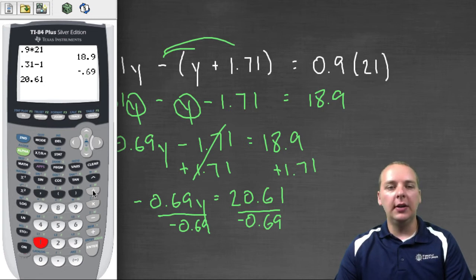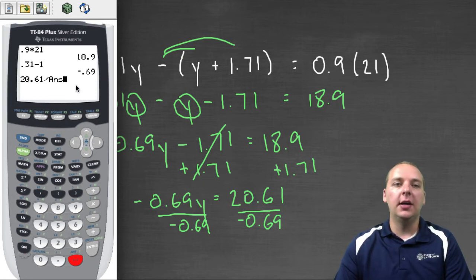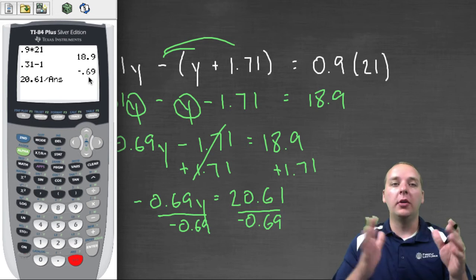And what that'll do is the calculator will go back and retrieve the previous answer, in this case -0.69. I know that's a little lazy, I could have just typed it in, but you can see why that would be helpful if it was a very long decimal. And go ahead and push enter.